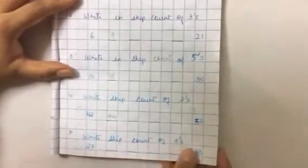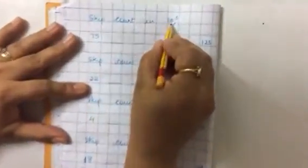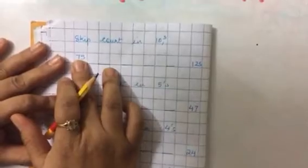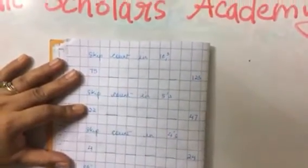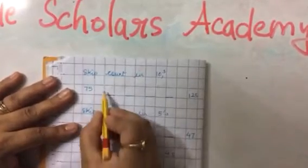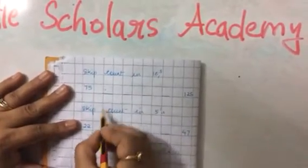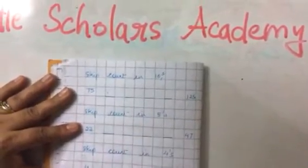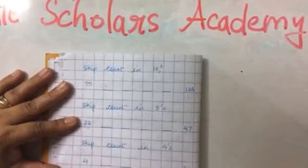Fifth question hai. Write skip count of threes. Three numbers. We will do skip. Skip count and tens. Yaha peh ten ten numbers hum leave kerenge. Seventy five. Seventy five ke baad next number kya aayega? Agar ham skip count ker rahe hain ten ka? Very good. Think and write. Skip count in fives. Phir se skip count humnye karna hai. Five numbers leave kerke.